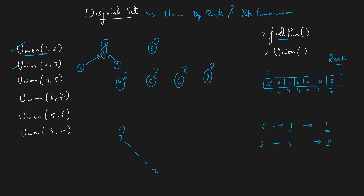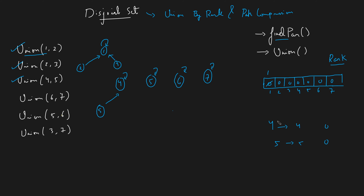For union(4, 5): parent of 4 is 4, parent of 5 is 5, both rank 0. Connect 5 to 4, making 4 the parent, and increase rank of 4 to 1. For union(6, 7): similarly both rank 0, connect 7 to 6, rank of 6 becomes 1. For union(5, 6): parent of 5 is 4 with rank 1; parent of 6 is 6 with rank 1. Equal ranks, so connect 6 to 4; rank of 4 increases to 2. That is union by rank — lower rank attaches to higher rank, and rank increases only when attaching equal-rank nodes.